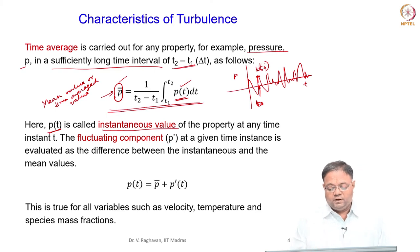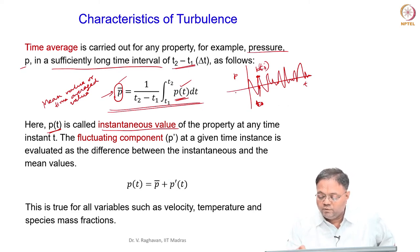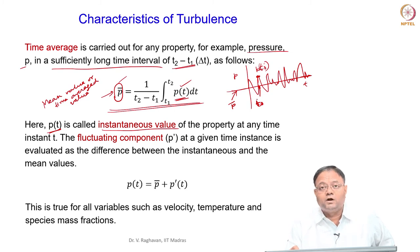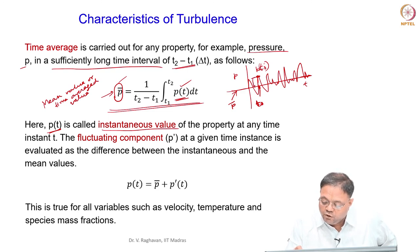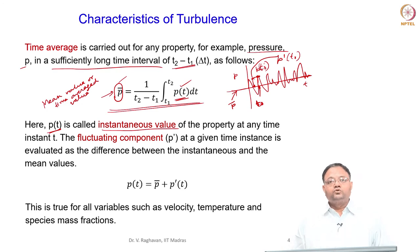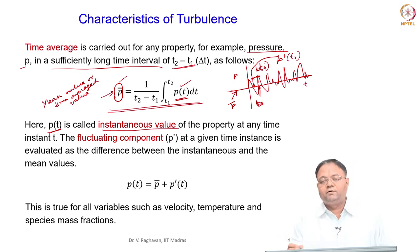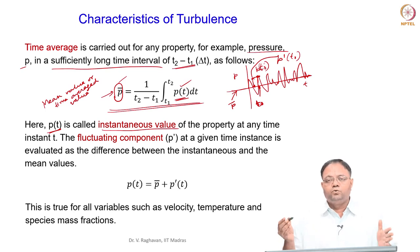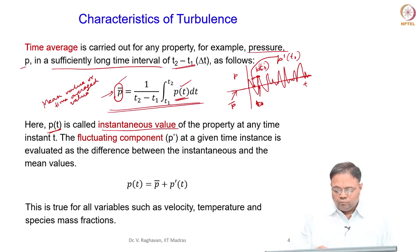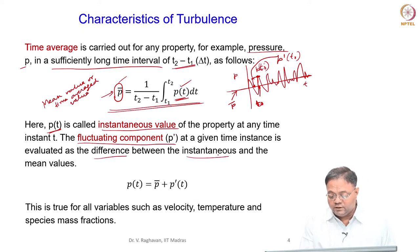The fluctuating quantity is denoted p′, also a function of time. If the mean line is drawn representing the mean value P-bar, the instantaneous value at any time is p(t), and the fluctuating quantity p′ at any time instant t₀ is measured as the deviation from the mean line. Both the instantaneous value and the fluctuating quantity vary in time, while the mean is kept constant by time averaging over a sufficiently long interval.